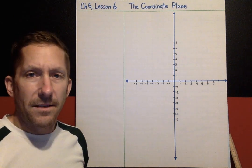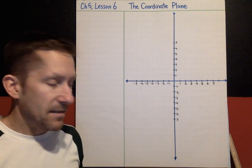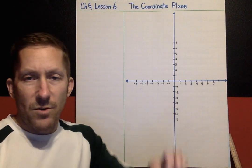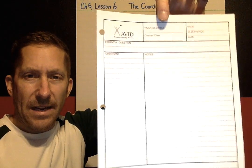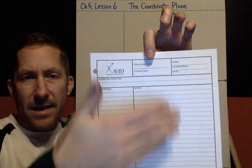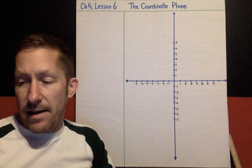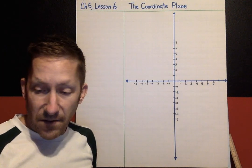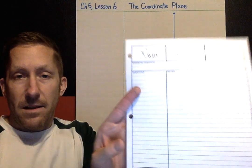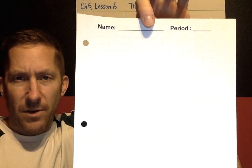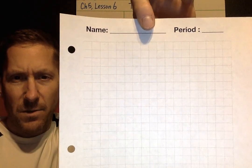Hi students, this is Chapter 5, Lesson 6. Before you write anything down, you may use a Cornell Note page for today's notes and vocabulary, and make the coordinate plane here. However, if it's easier, you may want to switch to a piece of grid paper for today's notes.